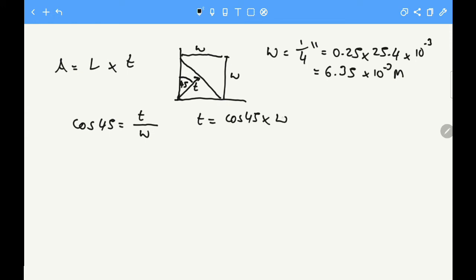If we rearrange that, t equals cos 45 times w. As we put in the workbook, cos 45 you can estimate at 0.707 times w which is 6.35 millimeters. That means t equals 4.49 millimeters, which in other words is 4.49 times 10 to the minus 3 meters.